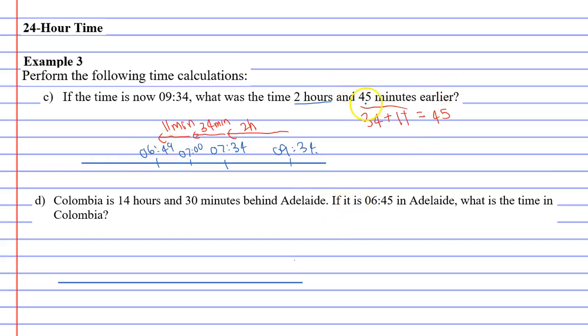So that's our time. What's the time 2 hours and 45 minutes earlier? 6.49 hours. Remembering our question is in 24-hour time, so our answer should also be in 24-hour time.